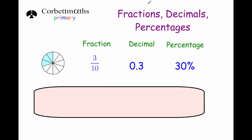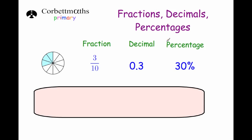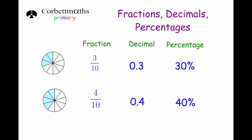Three tenths: that's another 10%, so 10, 20, 30% — as a percentage 30%, and as a decimal 0.3. Four tenths would be 0.4 and 40%, but that does cancel down — we've had this one already as two fifths. So two fifths is also 0.4 and 40%.